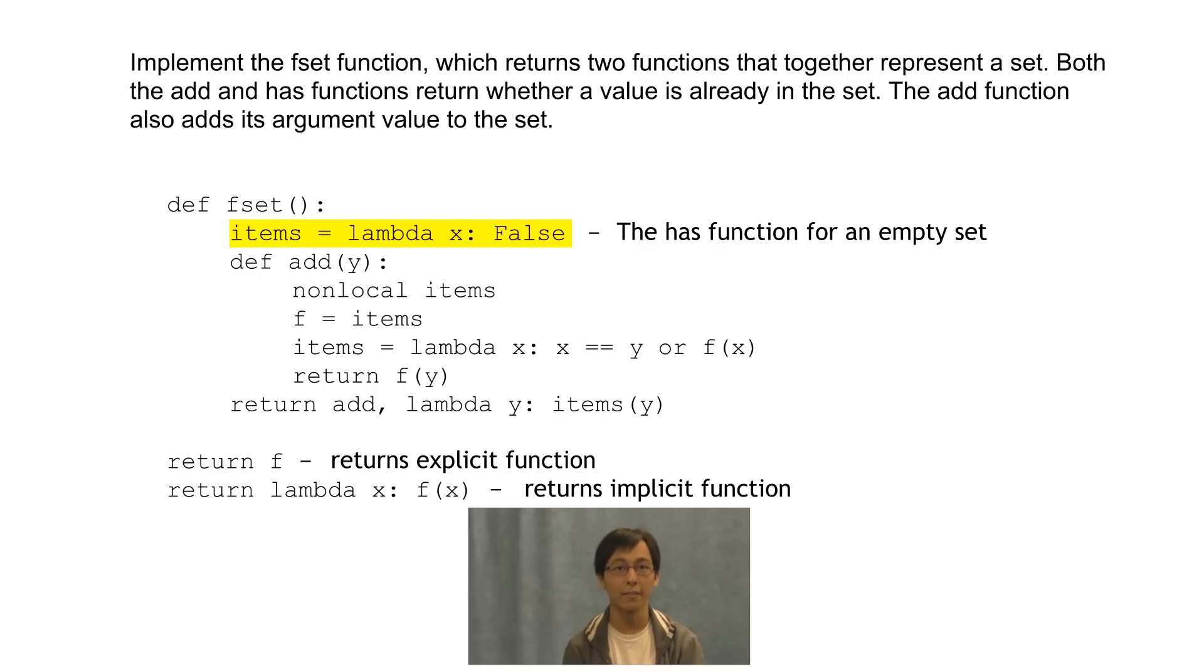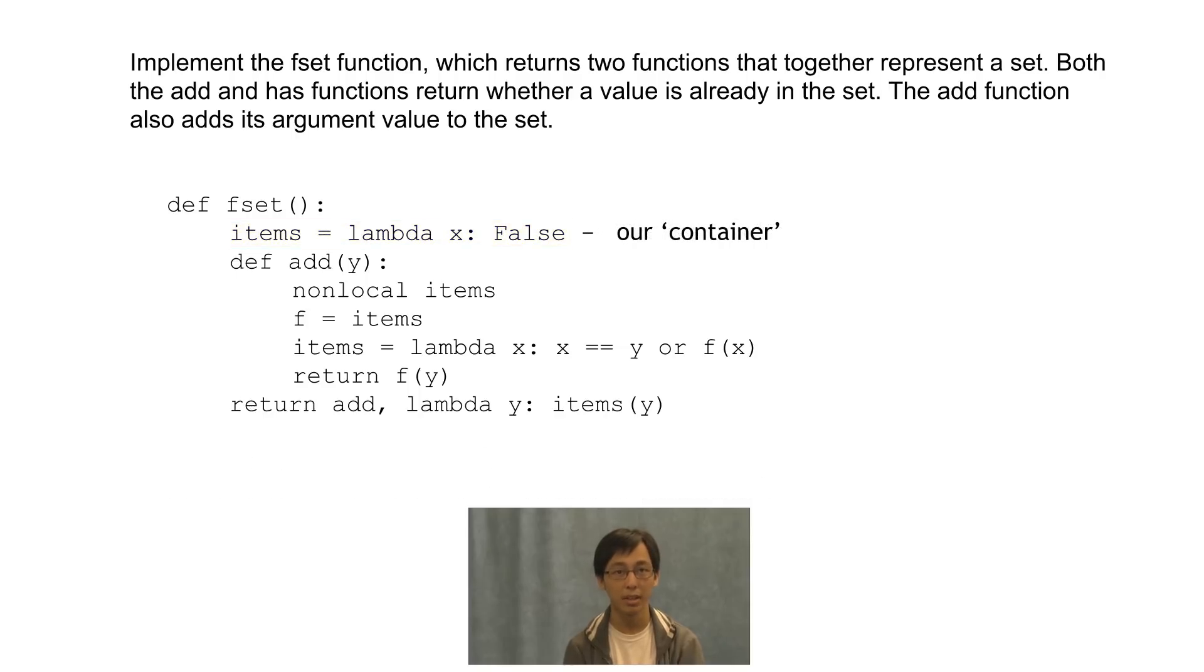The logic for the rest of the code, I think, follows pretty easily, especially if we think of items as our container. When we look at add, we'll see why it's important that we refer to items implicitly. For one, we declare the items function or container to be non-local and then we set f to be the items we have so far.